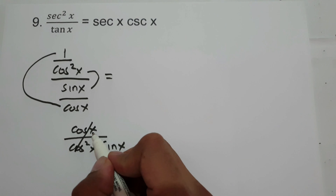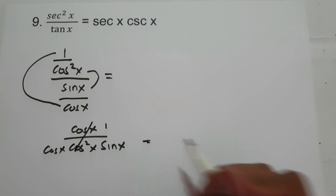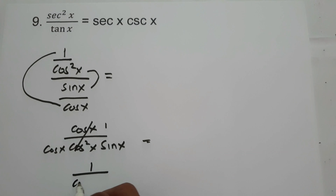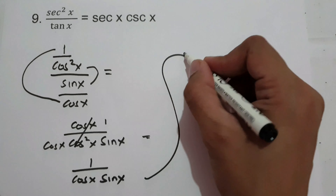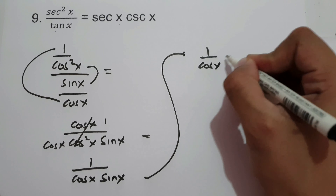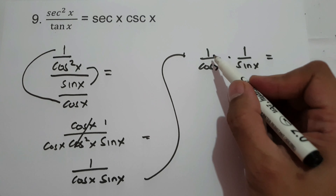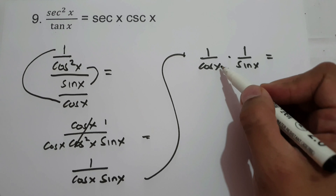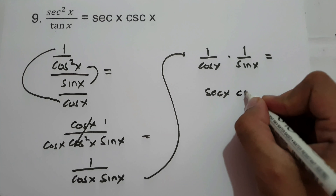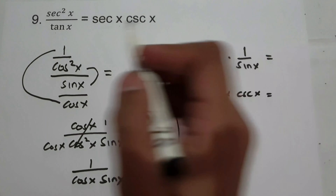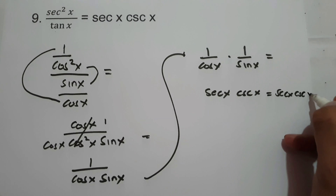So let us cancel: cosine x becomes 1, cosine squared x becomes cosine x. So let us simplify, we have 1 over cosine x times sine x. Then let us have 1 over cosine x multiplied by 1 over sine x. The reciprocal of 1 over cosine x is secant x, and the reciprocal of 1 over sine x is cosecant x. Therefore, secant squared x over tangent x is equal to secant x times cosecant x.